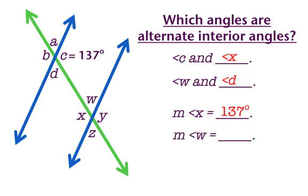Now, what would the measure of angle W be? Remember, angle C is 137 degrees. If angle C is 137 degrees, then the measure of angle D is 43 degrees. So if the measure of angle D is 43 degrees, that's an alternate interior angle with angle W, and angle W will also be 43 degrees.